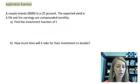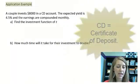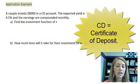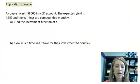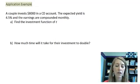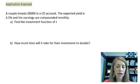My application here is a couple invest $8,000 in a CD account. The expected yield is 4.5%, and the earnings are compounded monthly. We want to find the investment function as a function of time. This goes back to compound interest, and it's asking you, can you recite the compound interest formula, and can you put all of the numbers that are given here in those places? So let's go ahead and do that.